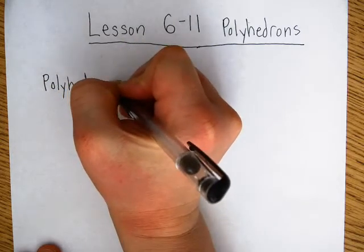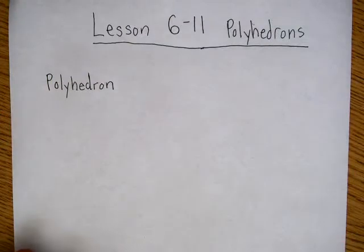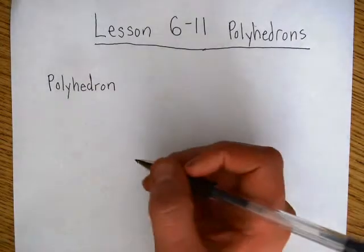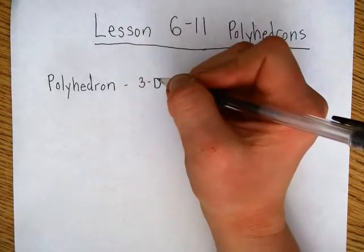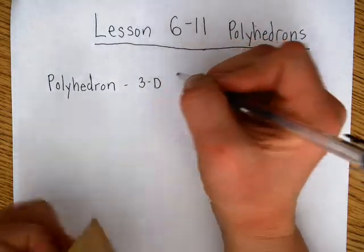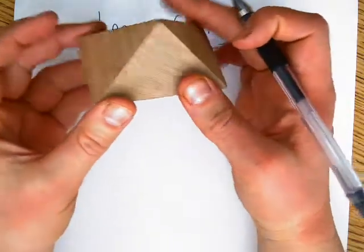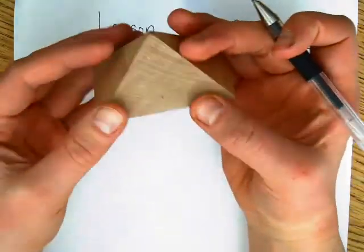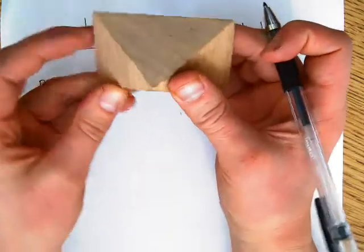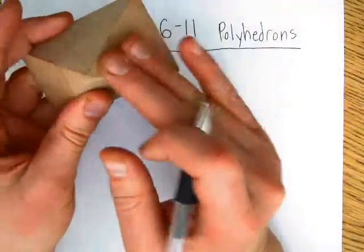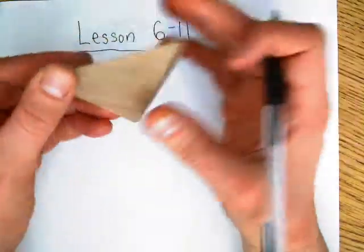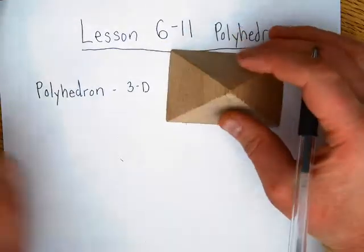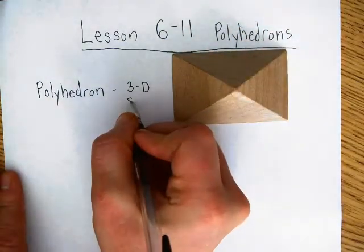The first vocab word is polyhedron. A polyhedron is a solid whose surfaces are flat and formed by polygons. So it's basically a 3D shape with flat surfaces. For example, this would be a polyhedron because the surfaces are all flat, it's a 3D shape, and all of the sides are formed by polygons.